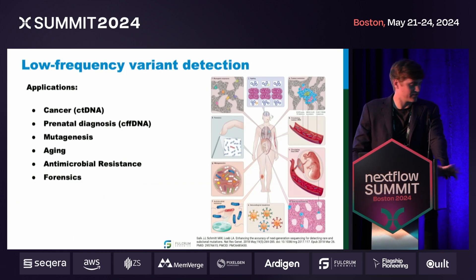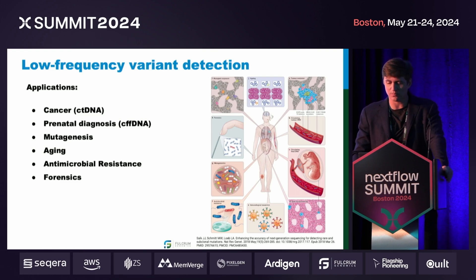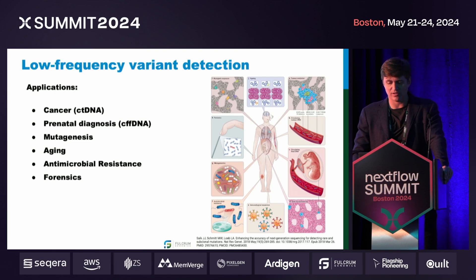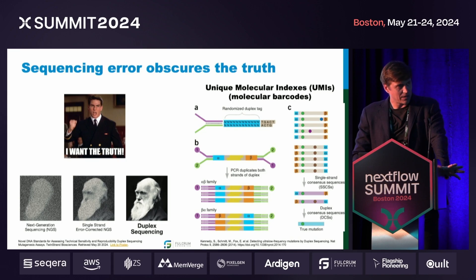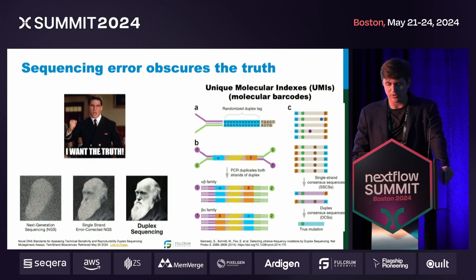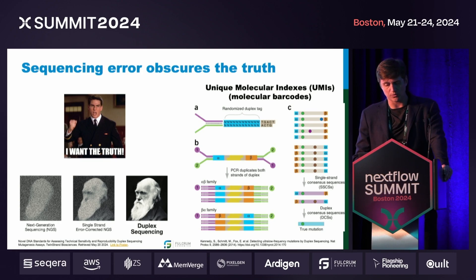Finding the one in a thousand difference, or maybe sometimes the one in a million difference, is really important for a diversity of applications. But obtaining that accuracy to achieve the incredible resolution that's needed is extremely difficult. Such accuracy has been achieved through molecular barcoding that enables squashing random error through multiple observations of a single source DNA molecule.